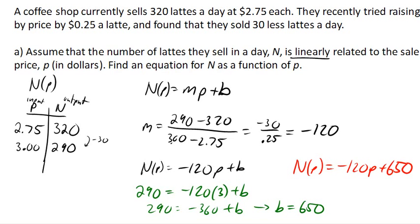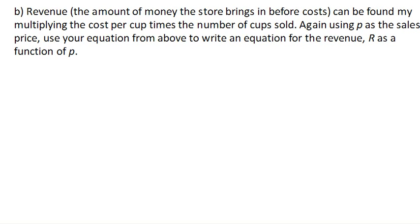Next, revenue. We're told the amount of money that the store brings in before costs can be found by multiplying the cost per cup times the number of cups sold. In other words, revenue equals cost per cup times number of cups.